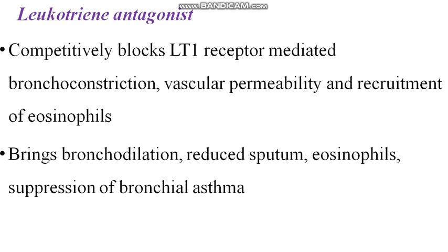The next class of drug is leukotriene antagonists. An example is Montelukast. It competitively blocks the leukotriene 1 receptor, thereby inhibiting its actions like bronchoconstriction, increased vascular permeability, and recruitment of eosinophils. This results in bronchodilation, reduced sputum, reduced eosinophils, and suppression of bronchial asthma.